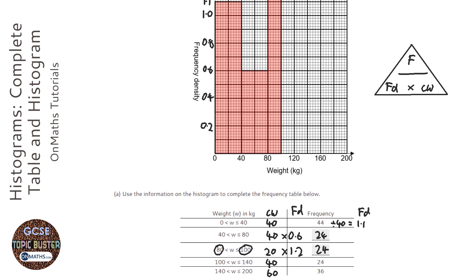Okay, this time I've got to work backwards. So I've given the frequency and I've given the class width. So I need to divide them across, so divide that by 40 and divide that by 60 to work out the frequency densities. So 24 divided by 40 is going to be 0.6, and 36 divided by 60 is going to be 0.6 as well.